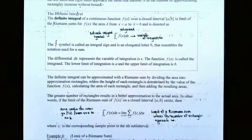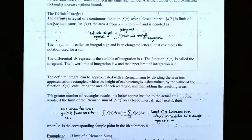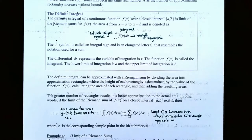The definition of the definite integral: if the function f of x is a continuous function on the closed interval x equals a to x equals b, then it can be shown that the limit of the left sums and the right sums approach the same real number, capital A, as the number of approximating rectangles increase without bound. If you increase the number of rectangles used to approximate the area under the curve starting at x equals a and ending at x equals b, then the approximation will become more and more accurate.